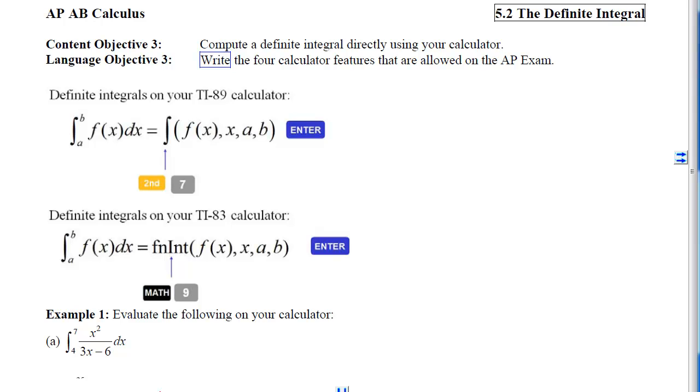This is Section 5-2, The Definite Integral, Content Objective 3, which is to compute a definite integral directly using your calculator. When you're done, I want you to be able to reiterate what the four calculator features that are allowed on the AP exam are.